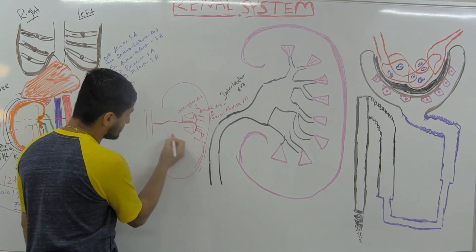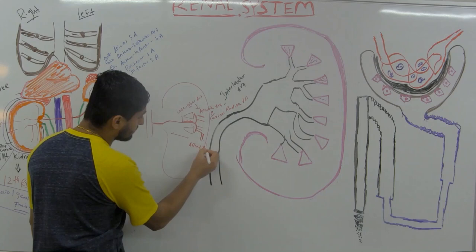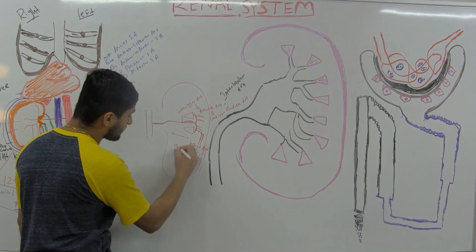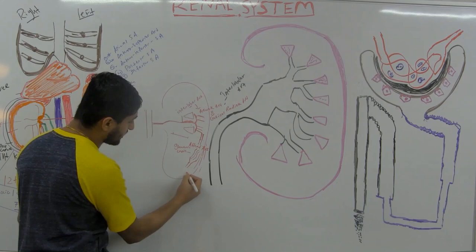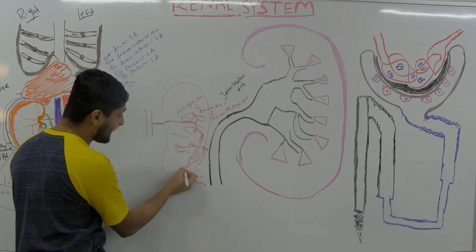The cortical radiate artery branches into afferent arterioles. The afferent arterioles then form a looping capillary network called the glomerular capillaries. The glomerular capillaries come back together and become the efferent arterioles, which then break down again into the peritubular capillaries.